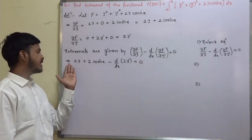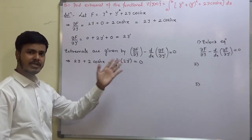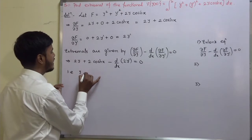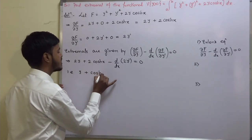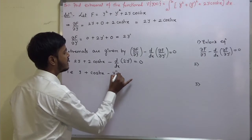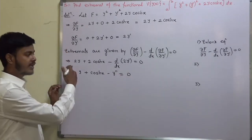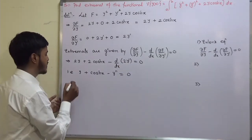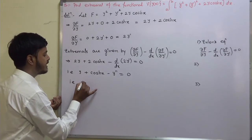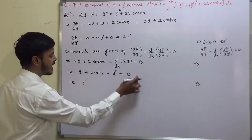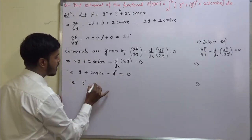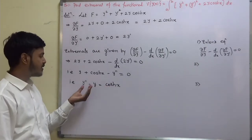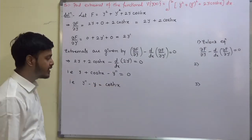There is a factor of 2 common throughout, so dividing by 2 and taking the derivative of the last term, we get y plus cosh(x) minus y-double-dash equals 0. Rearranging, taking y to one side and the x term to the other side.